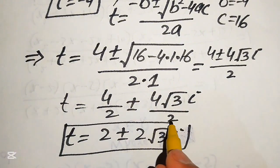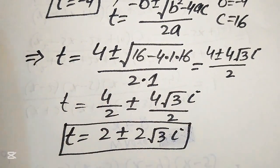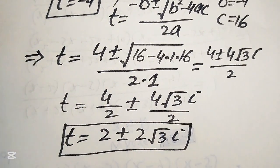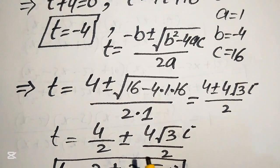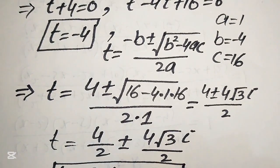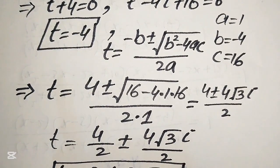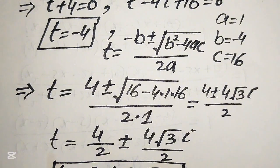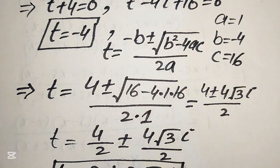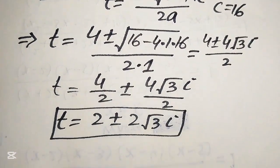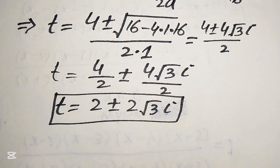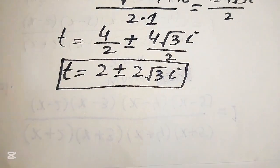These are the other two complex roots from equation number 2. From each equation we get 3 roots, so in total we get all 6 roots of the given equation. This is our final answer.